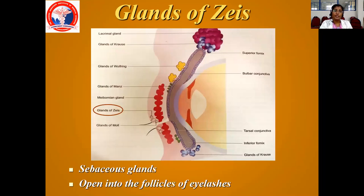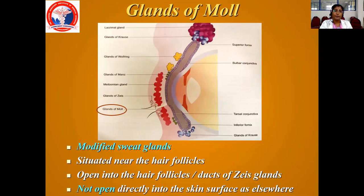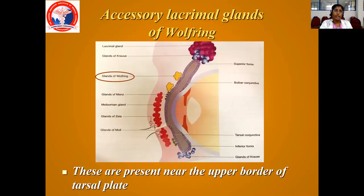Glands of Zeis are sebaceous glands that open into the follicles of the eyelashes. Glands of Moll are modified sweat glands situated near the hair follicles — they open into the hair follicles or ducts of Zeis glands but do not open directly into the skin surface. The accessory lacrimal glands of Wolfring are present near the upper border of the tarsal plate, and the lacrimal gland is present in the supralateral portion of the orbital wall.